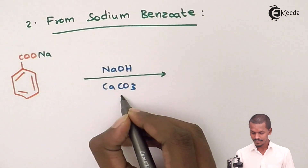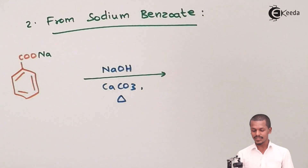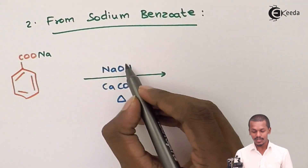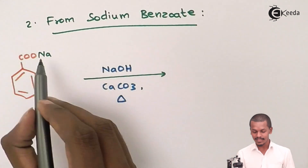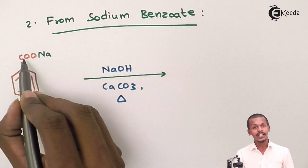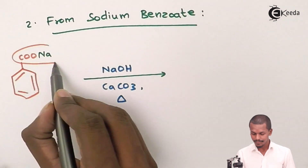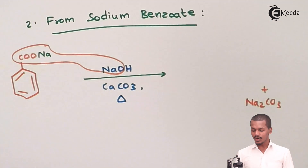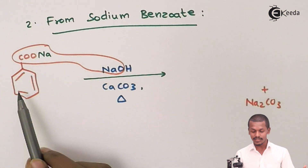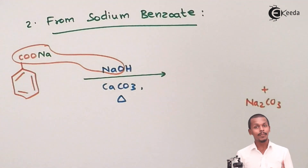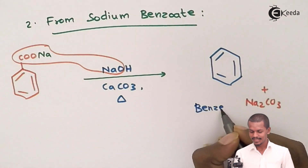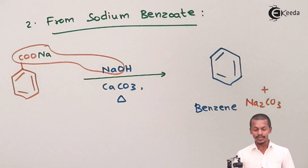We carry out the reaction in presence of CaCO₃ as well as NaOH. Because of this, decarboxylation takes place. The sodium along with the carbon and oxygen atoms are removed, so that only the phenyl group and one hydrogen atom remain. This phenyl group and hydrogen atom combine together to form benzene.